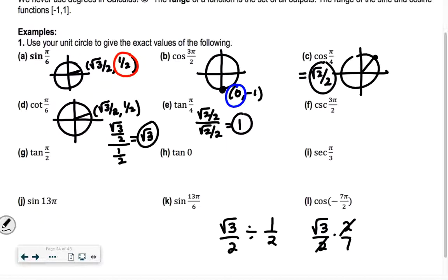So the next one, cosecant of 3π/2. Well, 3π/2, that's the same as how many degrees? 270. It's way down here on the bottom. That's the point 0 comma negative 1. Cosecant is the reciprocal of which one? The sine. So it's going to be 1 over the sine of 3π/2. What's the sine of 3π/2? Negative 1. So what's 1 over negative 1? Negative 1, exactly.